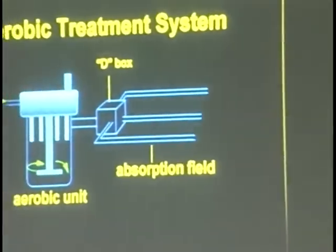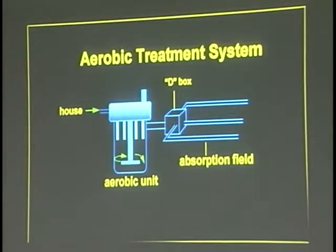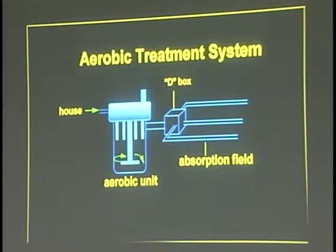We started out with the aerobic treatment unit system back in the mid-80s on some of these difficult sites. The aerobic units came in the beginning with a two- or three-year maintenance agreement on them. When we started putting the aerobic units in, we said that's not good enough for three years. Canandaigua Lake is a drinking water source for over 65,000 people. If we're going to allow these to go in, then the homeowner's going to have a maintenance agreement, and when it expires, get it renewed — he's going to have a maintenance agreement on that unit for as long as the unit is in use. Period. And that's what we enforce.